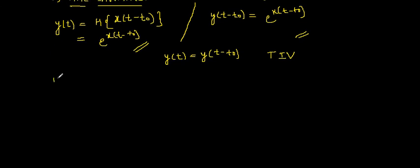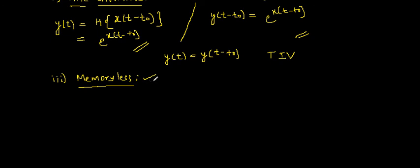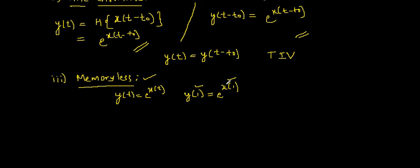Moving to the third property: memoryless. A system has memory if the output at any given time depends on past or future values of the input. A system is memoryless if the output depends only on the input at that same instant. For y(t) = e^x(t), the output at time 1 is e^x(1), depending only on the present input value. Hence the system is memoryless.